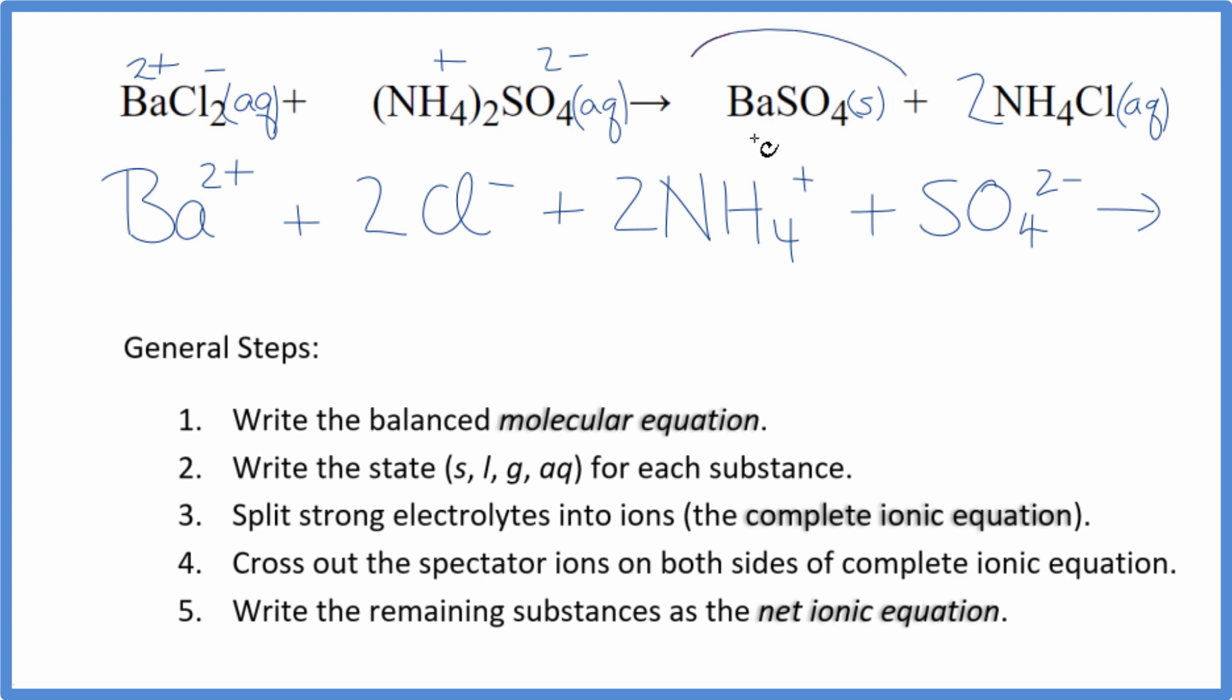For the products, we don't split solids apart, so we'll just have BaSO4. And then we have the ammonium ion and the chloride ions. We have two ammonium ions plus we have two chloride ions, just like the reactants. So this is the complete ionic equation.